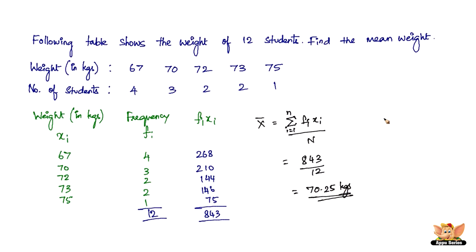Therefore, the mean weight of the 12 students is 70.25 kg. You need to know which is x and which is frequency—the frequency is the number of items having a certain value. As long as you can identify that, you should be able to solve problems based on mean of grouped data by direct method very easily. This ends this video.